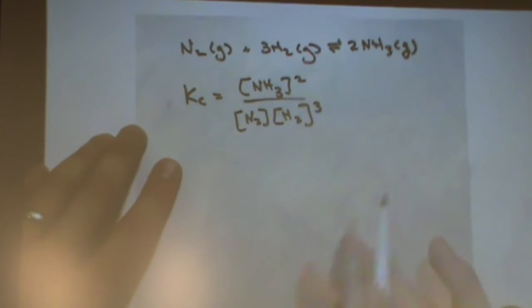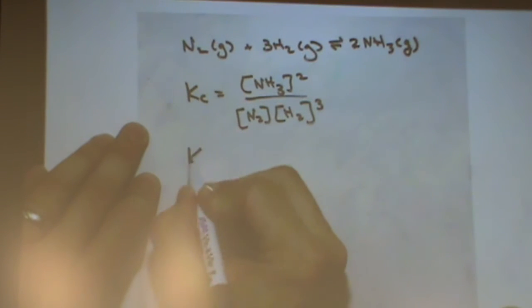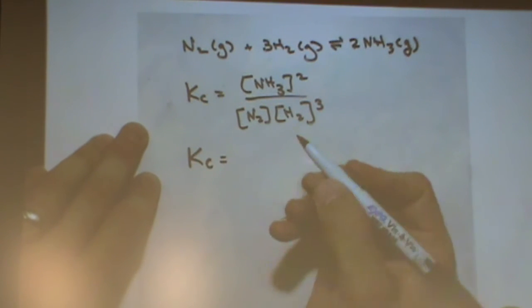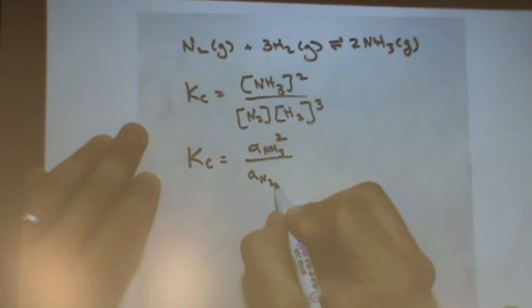But you didn't ask me about that, so I won't cover that. But if you're asked for activities, it's still a Kc, but you just write activities here. Everything else looks the same. Activity of ammonia squared, activity of nitrogen, activity of hydrogen cubed.